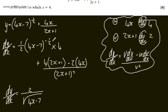That's simply using the rules of indices. Here we're going to have 8x plus 4 minus 8x, which is going to give us 4 over 2x plus 1 all squared.